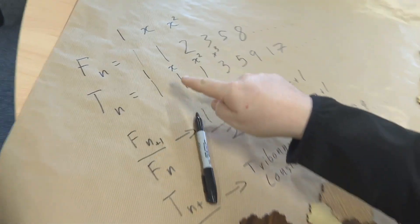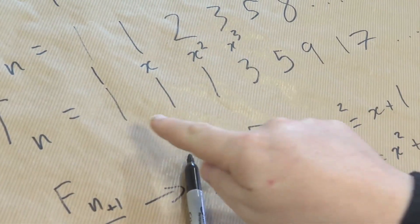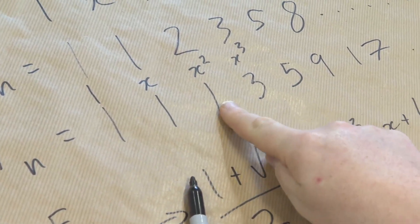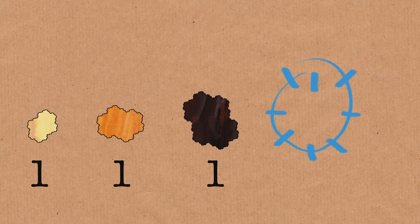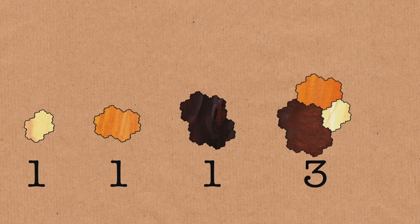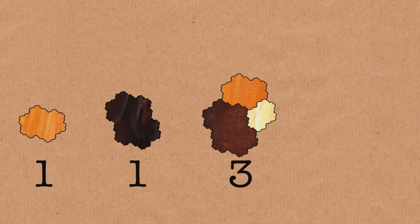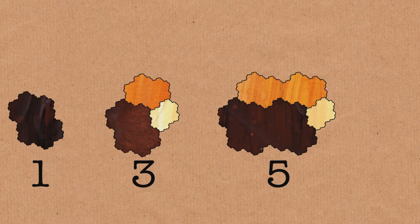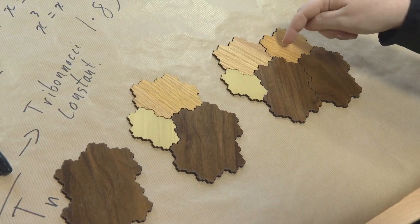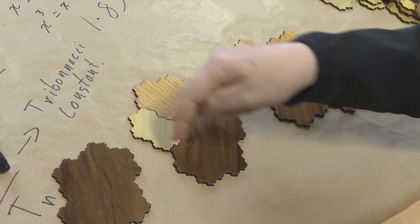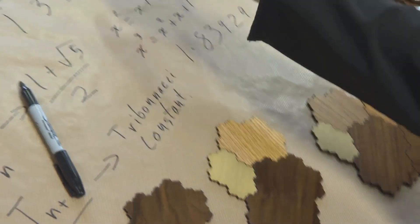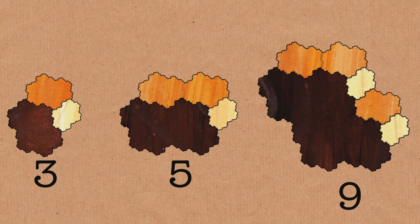So what are we going to have? I have my 1, 1, 1. I put those together, I get 3. Then 1, 1, and 3 give me 5. The next one is 5, 3, and 1, which gives me 9, and so on — it's the Tribonacci sequence.